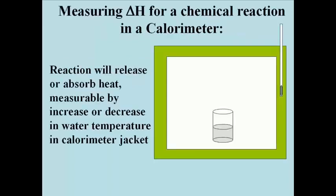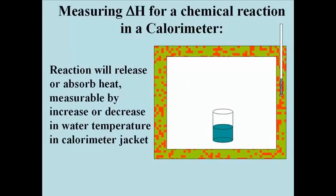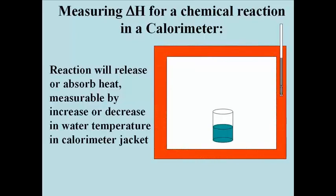We can measure the enthalpy change, or delta H, in a bomb calorimeter like the one cartooned on this slide. As the reaction proceeds, the change in temperature in the calorimeter will be detected as a change in the temperature in the water in the outer jacket.